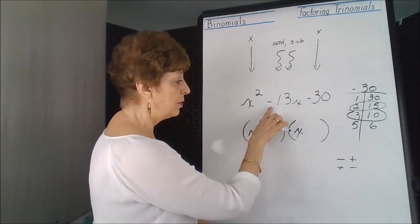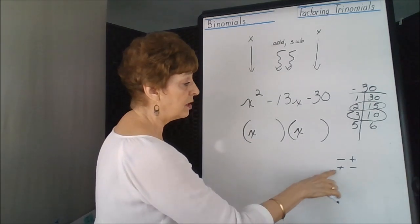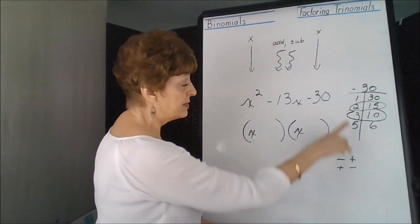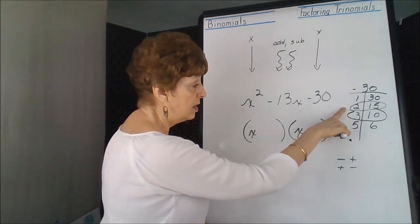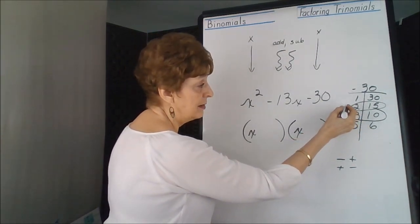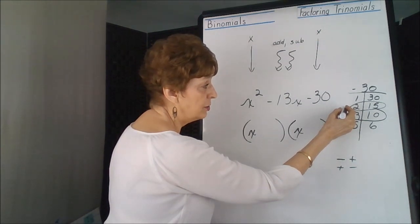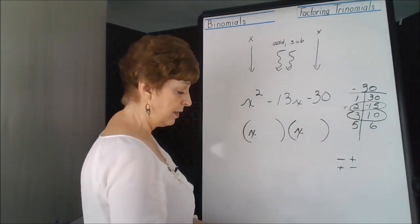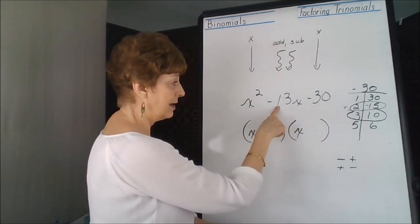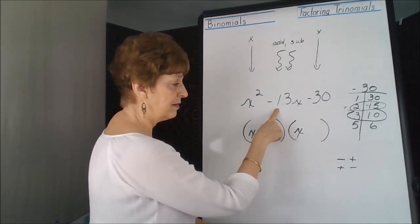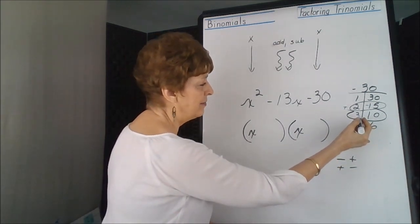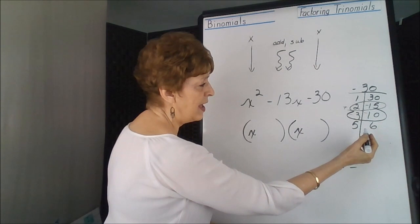In subtraction, we have to work now with the signs have to be different. So if the signs are different on this one, we could have a positive 2 and a negative 15. That would make a negative 13. In this one, the only way we can get to 13 is if we have two negatives on that.